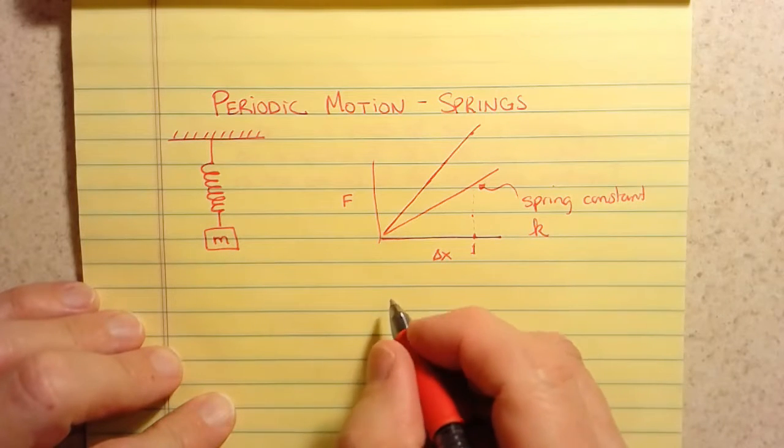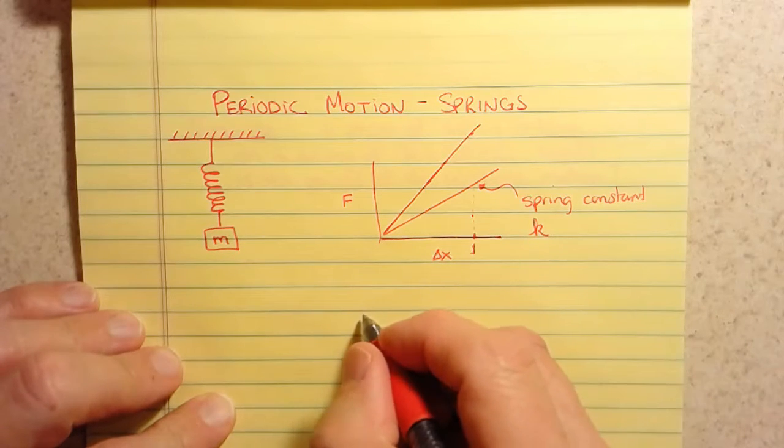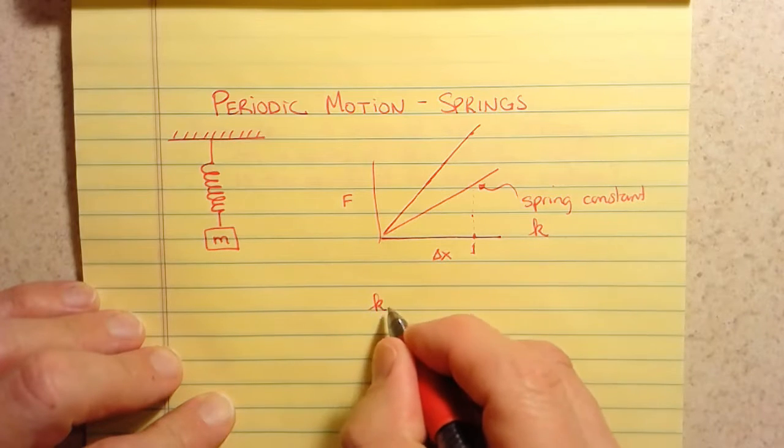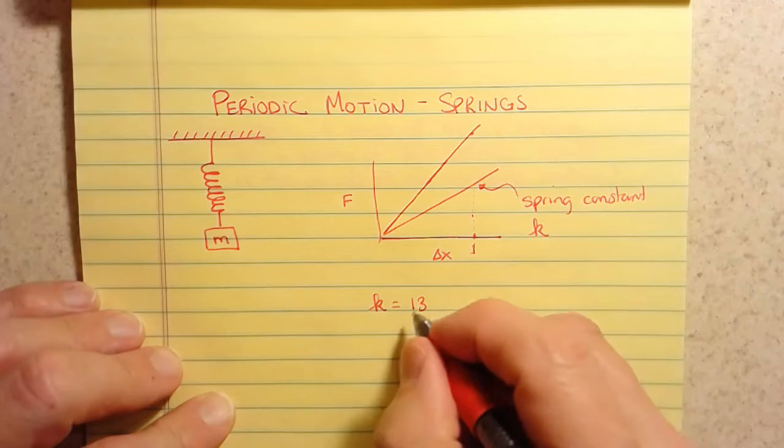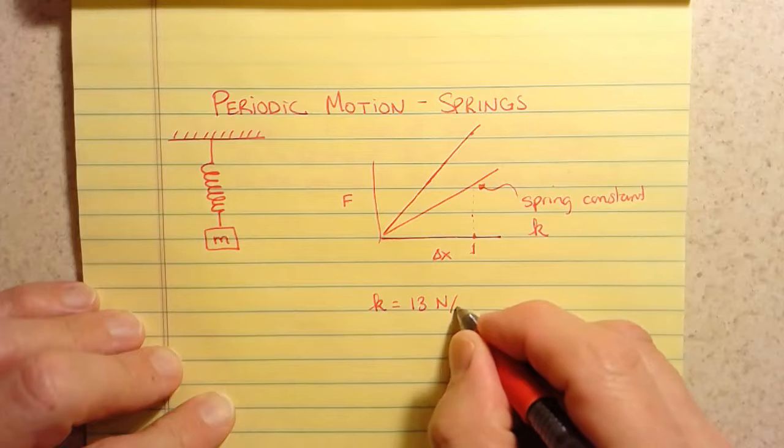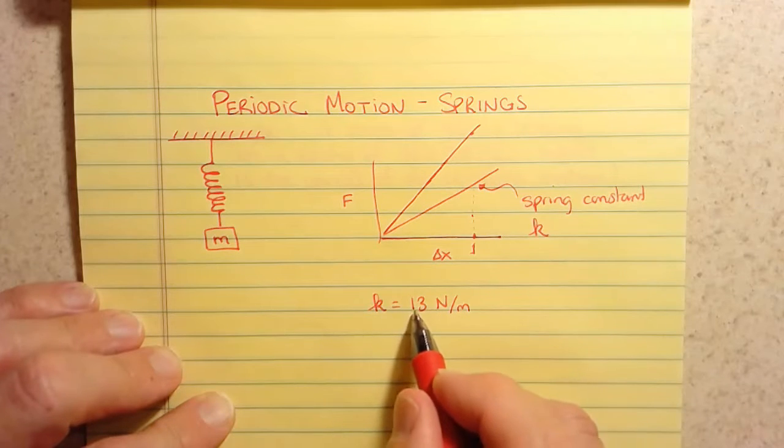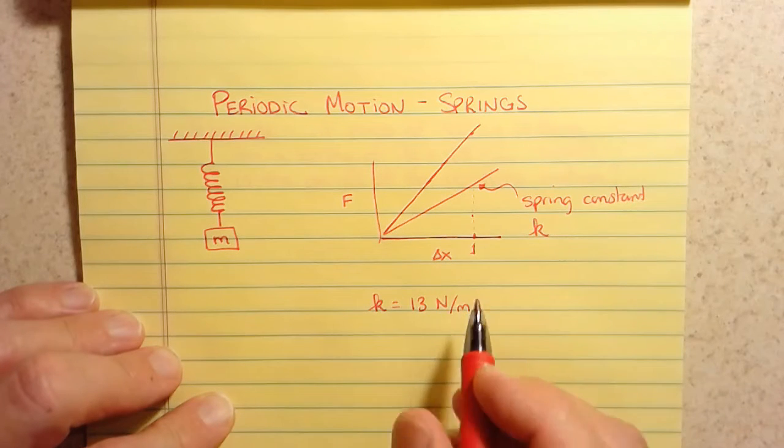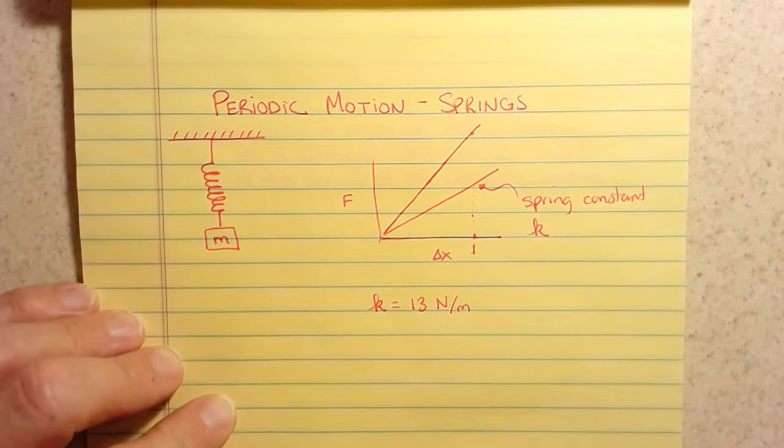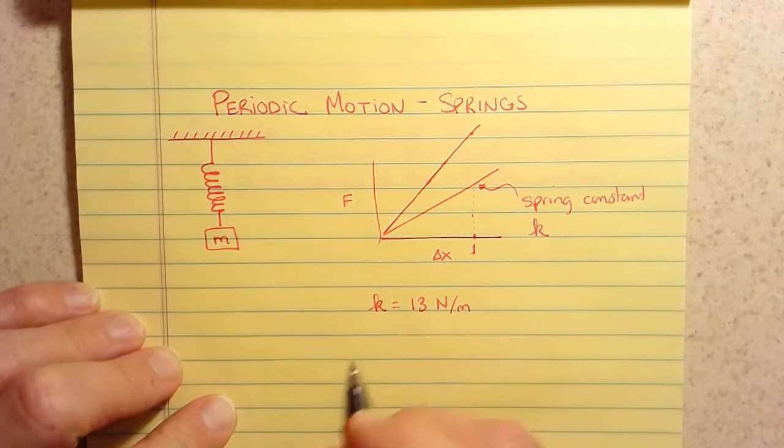So the springs we were using in class, you guys did an experiment with in lab, you actually were working with springs whose spring constant was about 13. And the units on the spring constant are pretty easy. It's newtons per meter. So a spring constant of 13 newtons per meter means that it takes 13 newtons of force to stretch the spring one meter. So that's not a whole lot of force to stretch it an entire meter. So that's a pretty weak spring.